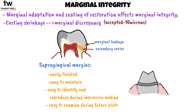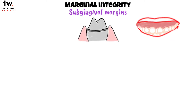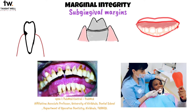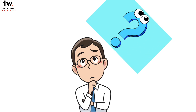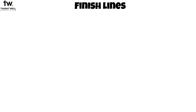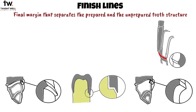On the other hand, in some cases, sub-gingival margins may be essential for certain restorations, such as teeth with short clinical crowns, in the presence of sub-gingival caries, cervical erosion, and where aesthetics is the primary concern or additional retention is needed, and in case of metal ceramic margins. To get a proper margin, the finish line should have certain characteristics. The finish line is the final margin that separates the prepared and the unprepared tooth structure.